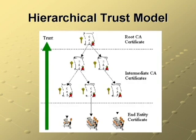Here's an illustration of the most common trust model: hierarchical. It's important to notice that trust always flows up from the end-users up to the top of the structure, the root CA.